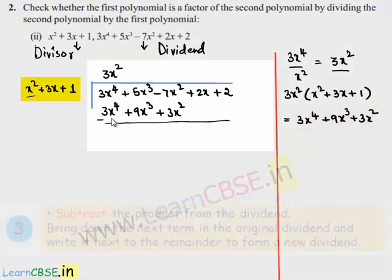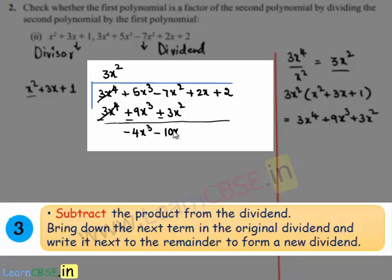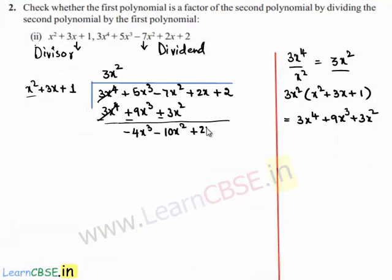On subtracting: 3x⁴ and -3x⁴ cancel. 5x³-9x³ gives -4x³, and -7x²-3x² gives -10x². Bringing down 2x+2, the new dividend is -4x³-10x²+2x+2.